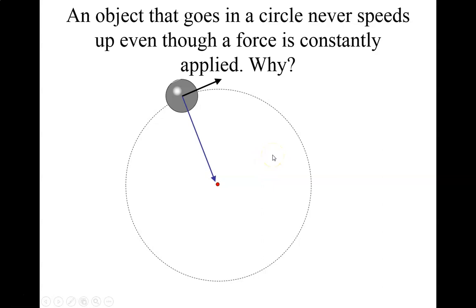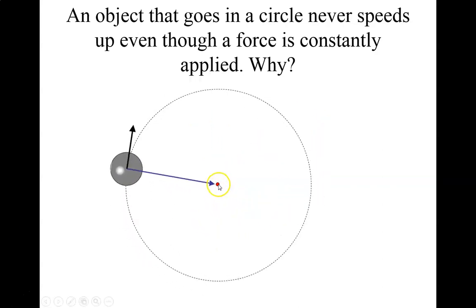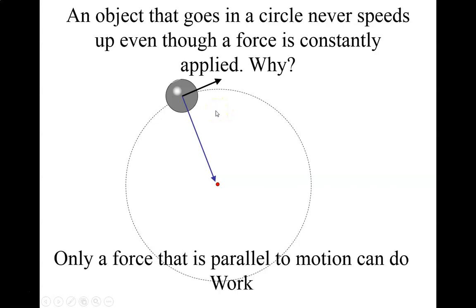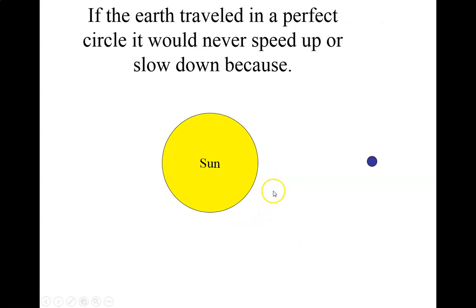An object that goes in a circle never speeds up even though a force is constantly applied. Why? In order to speed up, you need to change energy, and to change energy something has to do work. For an object traveling in a constant circle, the force is directed toward the center while the tangential velocity is perpendicular to it. Since force and motion are perpendicular, no work is being done and there's no change in speed. Only a force parallel to the motion can do work.